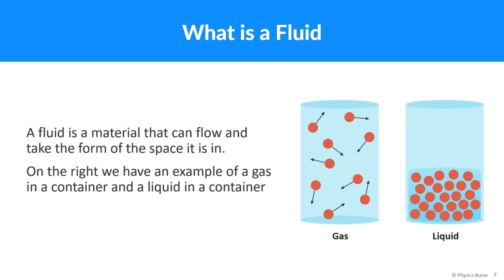So what is a fluid? A fluid is a material that can flow and take the form of the space it is in. Like the example I gave — you pour water into a cup, it takes the shape of the cup; you pour water into a bowl, it takes the shape of the bowl. On the right we have an example of gas in a container and liquid in a container. Gas is invisible many times but it's there — there's less matter. Liquid has more matter, packed closer together.